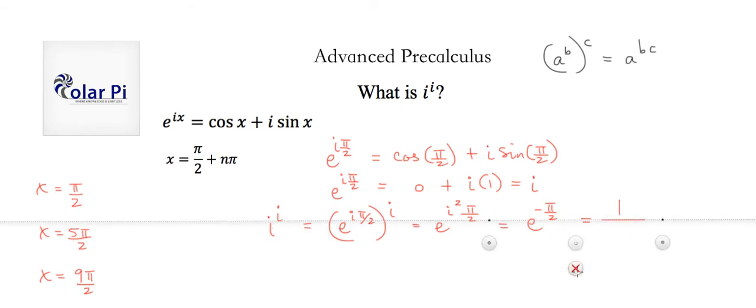So one answer to our question of what is i to the i-th power is 1 over e to the π over 2. And I say one answer because you'd get a different answer if you plugged in 5π over 2. So you'd get 1 over e to the 5π over 2 had we used 5π over 2 instead. And likewise with 9π over 2 and many other values.